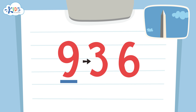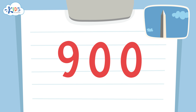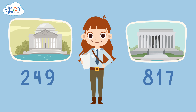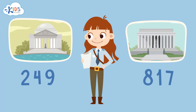I see a three in the tens place. I know if it's four or lower we have to round down. The nine in the hundreds place is underlined, so we have to round down 936 to 900. When rounding to the hundreds place, the numbers in the tens and ones places become zeros.